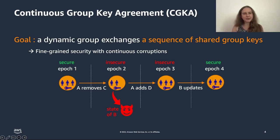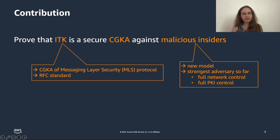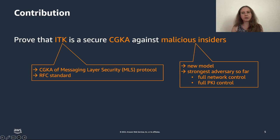Our contribution is to prove that a particular CGKA construction called ITK is a secure CGKA in the setting with malicious insiders. ITK is the CGKA construction of the messaging layer security, or MLS, protocol — an upcoming RFC standard. Part of our contribution was to isolate the parts of the protocol that make up ITK, which is not an easy task for RFC standards. We also provide pseudocode to make it easier to understand. Our next contribution was to define a malicious insider model — the strongest model considered so far. The adversary can fully control the network.